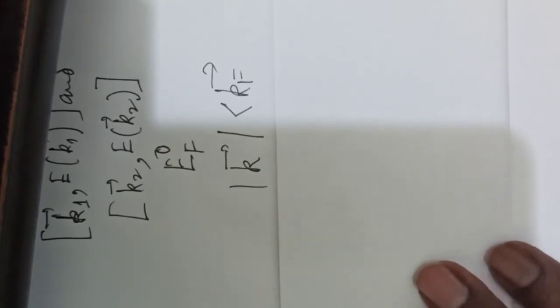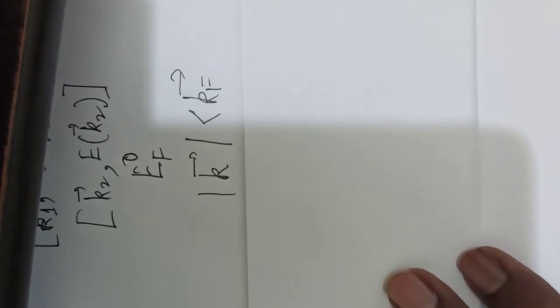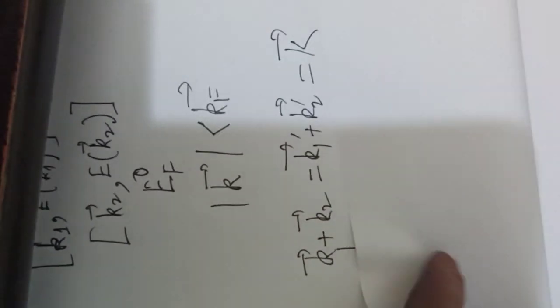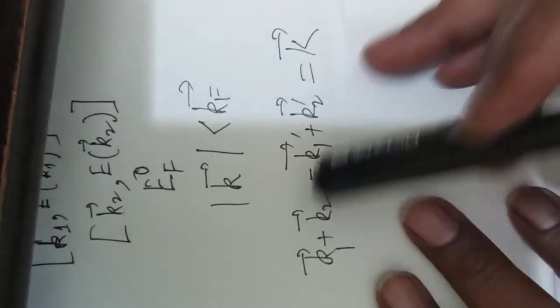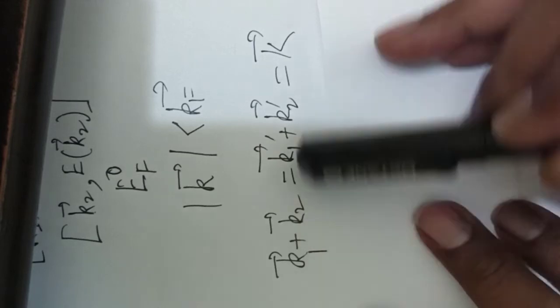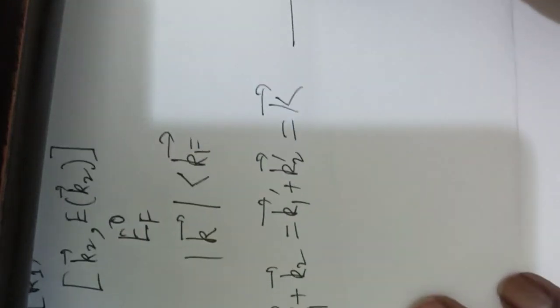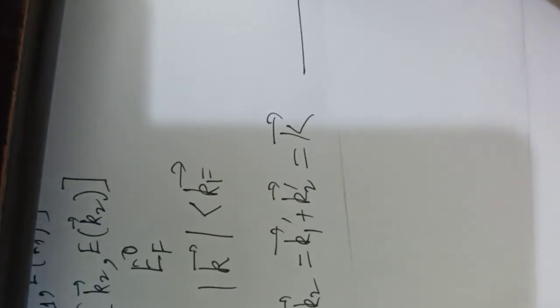Next, due to the phonon exchange, the two additional electrons continuously exchange their wave vector. However, the momentum has to remain conserved, and therefore we can write this particular equation: k₁ + k₂ = k₁' + k₂' = k, that is constant. So this is equation number one for us.